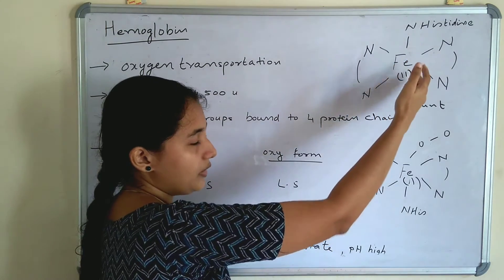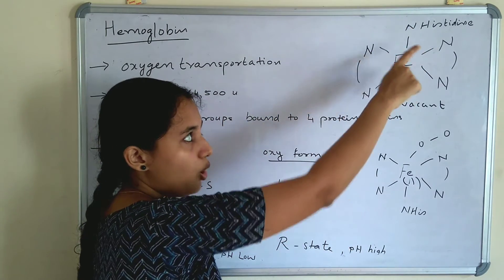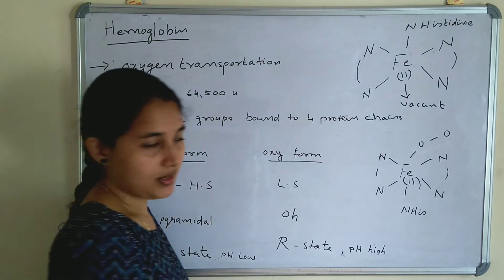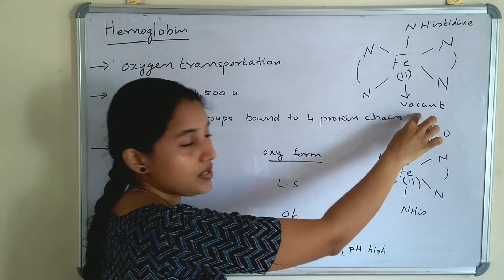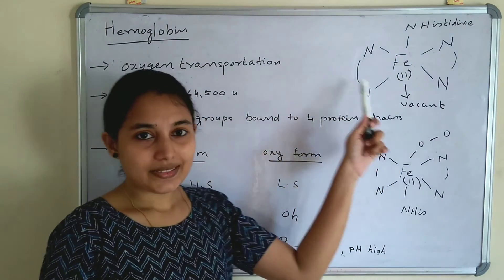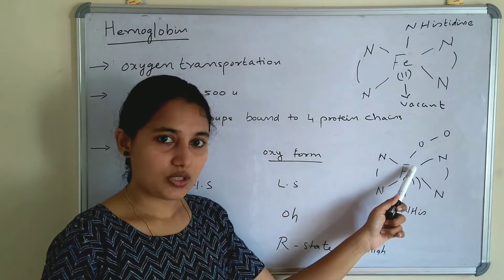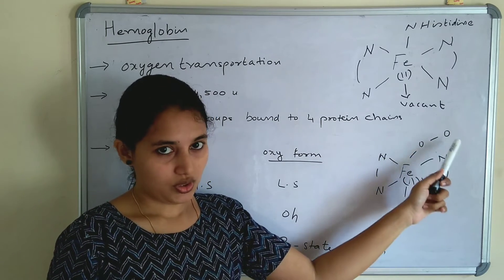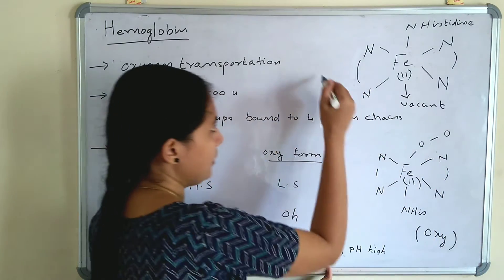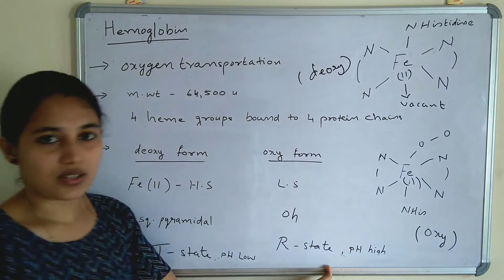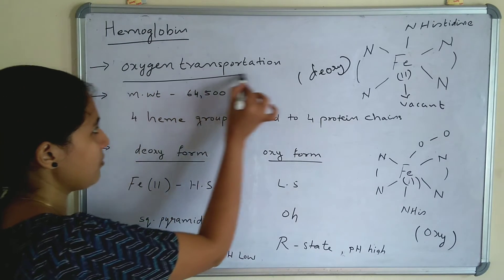Iron is in the +2 oxidation state. The 5th coordination position is connected to the nitrogen of histidine, which is an amino acid. The 6th position is vacant — this is the deoxy form of hemoglobin. In the oxy form, the 6th position is connected to O2, dioxygen. So the oxy form has oxygen at the 6th position, while the deoxy form has it vacant. This is the structure of hemoglobin.